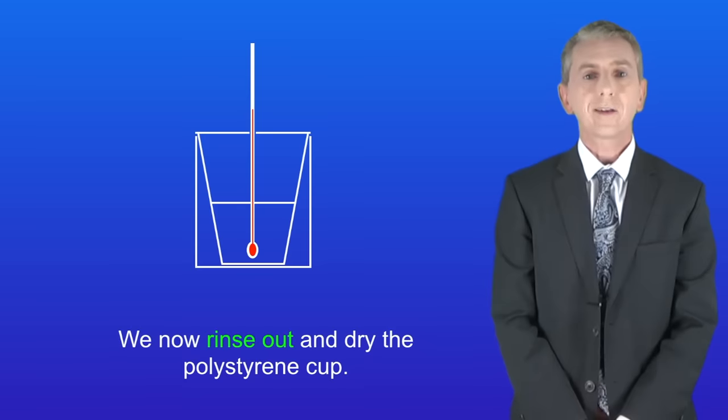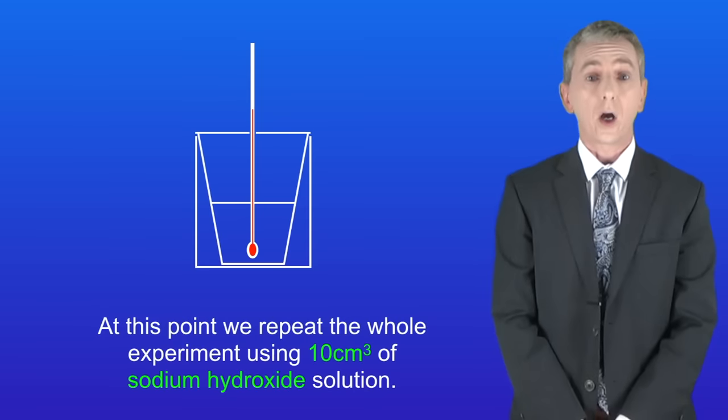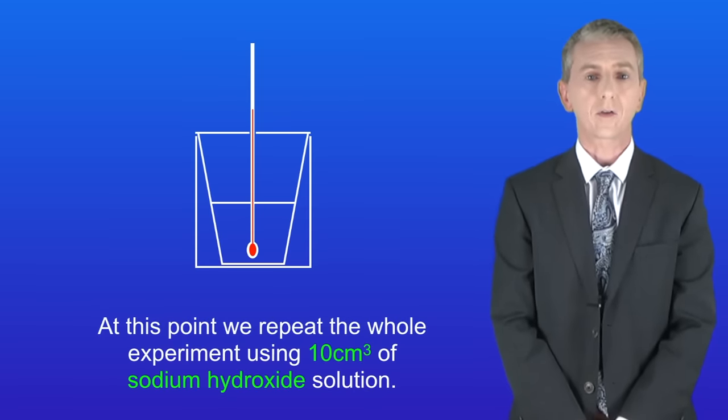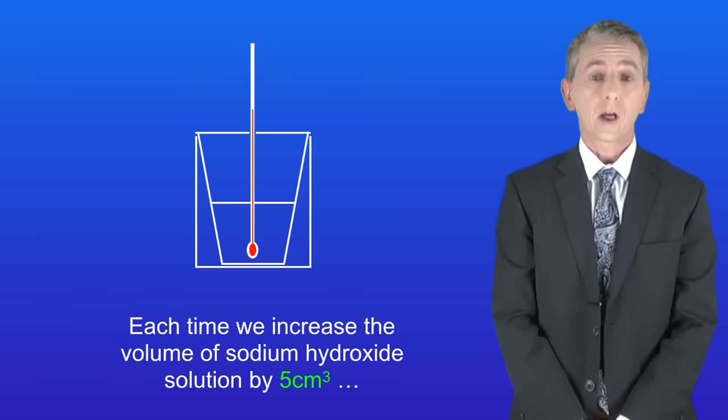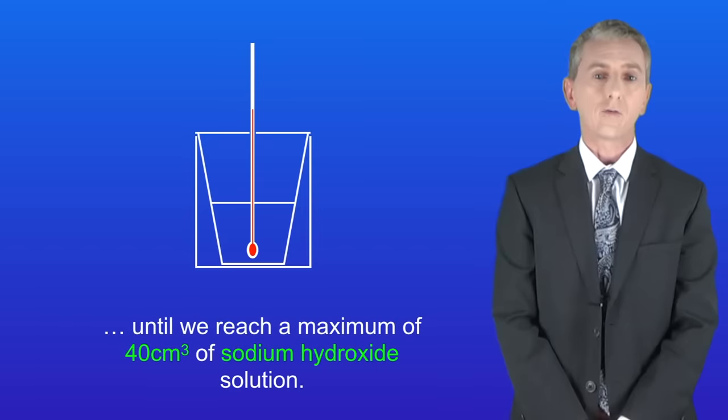We now rinse out and dry the polystyrene cup and at this point we repeat the whole experiment using 10 centimeters cubed of sodium hydroxide solution. We then carry out the experiment several more times and each time we increase the volume of sodium hydroxide solution by 5 centimeters cubed until we reach a maximum of 40 centimeters cubed of sodium hydroxide solution.